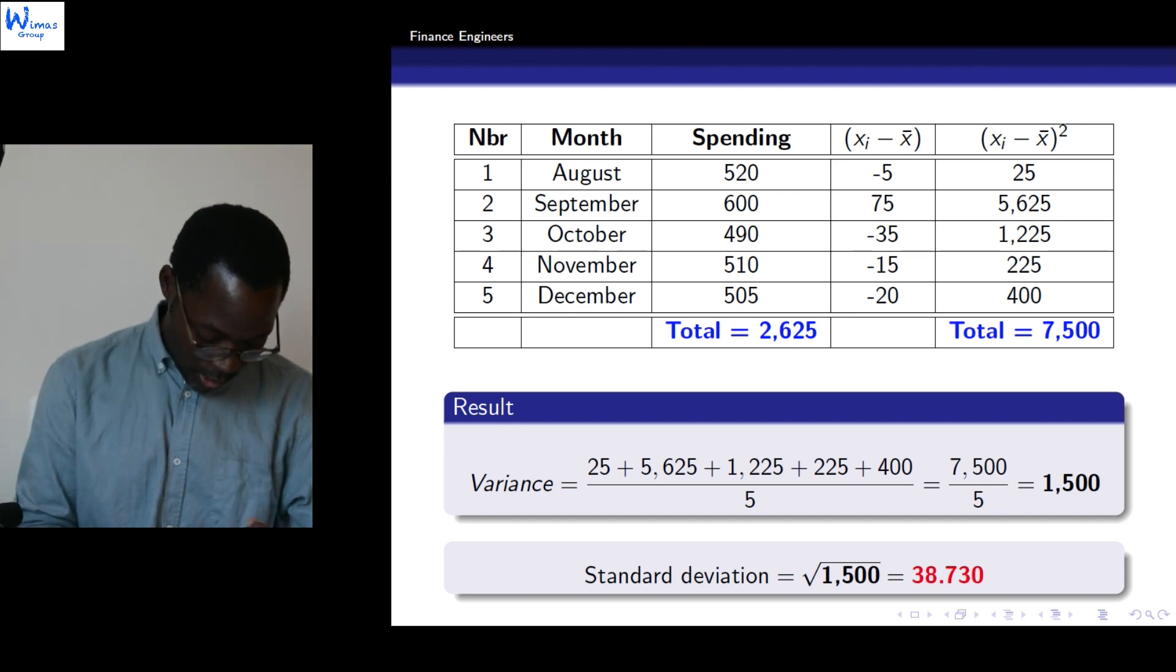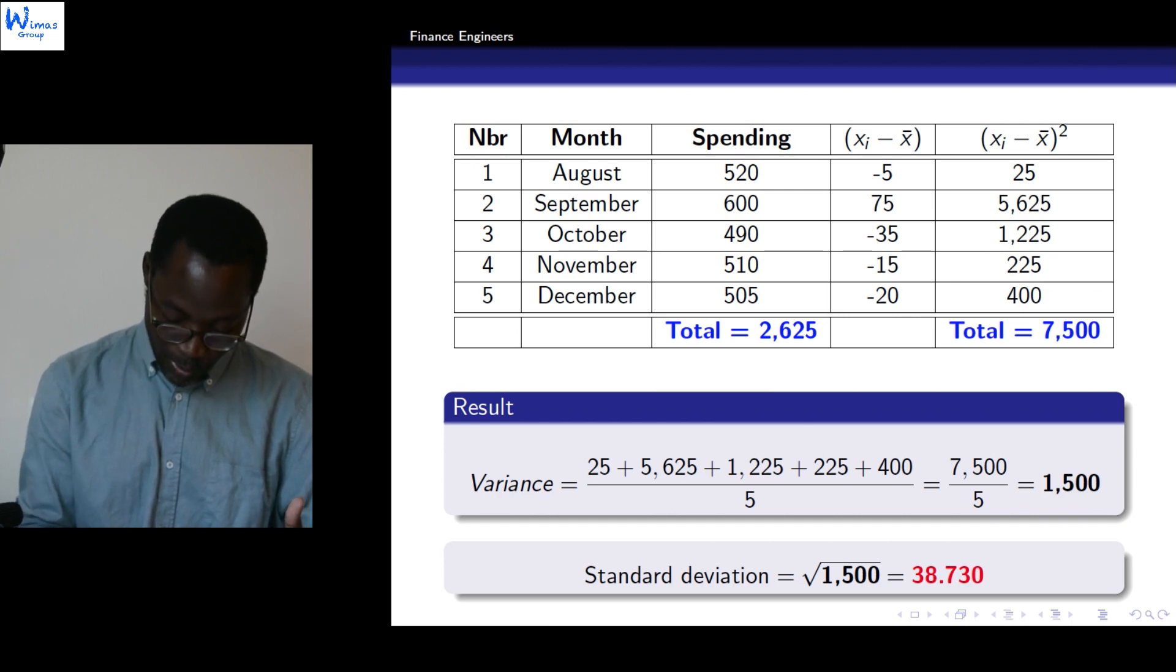So after obtaining the variance, which is 1,500, we can now easily obtain the standard deviation, which is equal to 38.730. This is the square root of 1,500. So now we've obtained the standard deviation of our observations, what Paul has spent during these five months, and we have obtained also the mean, which is 525.